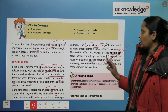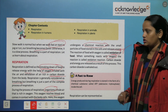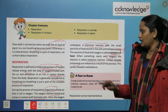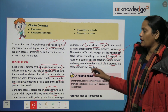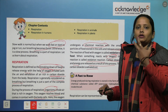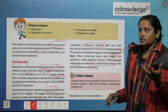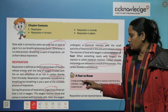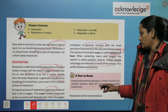As a result of this process, carbon dioxide and energy are released. This carbon dioxide is exhaled out of the body. Energy produced during respiration is stored in the form of a chemical substance called ATP — adenosine triphosphate — inside the cell.